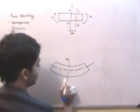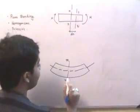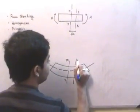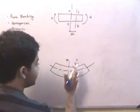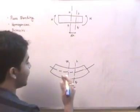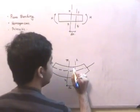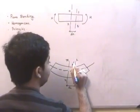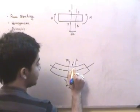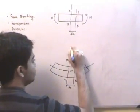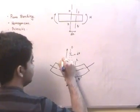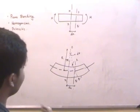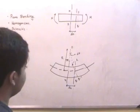Drawing the element, we have planes MN and PQ at a distance of dx. The plane PQ will undergo some change due to bending and will become P'Q'. P'Q' meets MN at point O, and the angle between them is dθ. The radius of curvature is R. Our aim is to find the stress at a point which is at a distance y from the neutral axis.